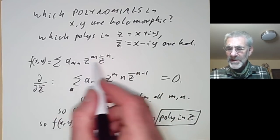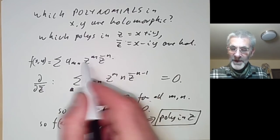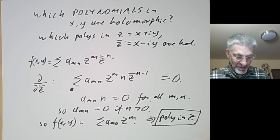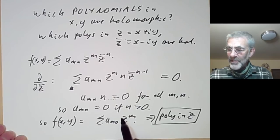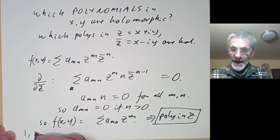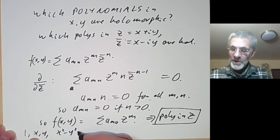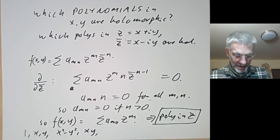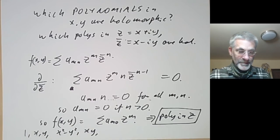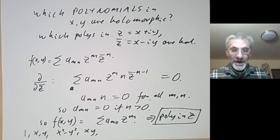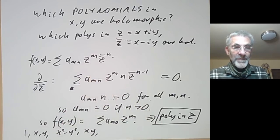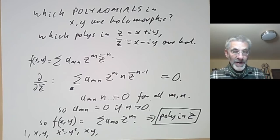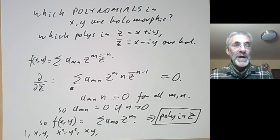So our function f(x,y) equals the sum of a_{m0} z^m — in other words it's a polynomial in z alone. This is an example of what was said earlier: holomorphic functions depend on z but not on z̄. If you write a function as a polynomial in z and z̄, the holomorphic ones are those that depend only on z. Something similar is true for infinite convergent power series. The holomorphic polynomials are just the real and imaginary parts of powers of z: 1, x, y, x²−y², 2xy, and so on. Next lecture will be about harmonic functions and their relation to holomorphic functions.